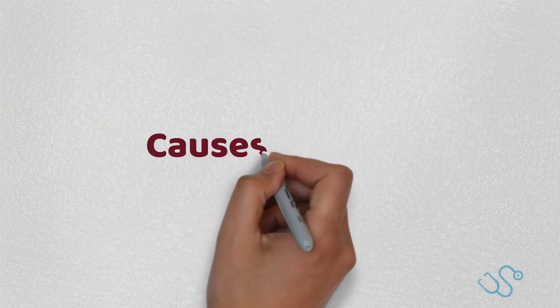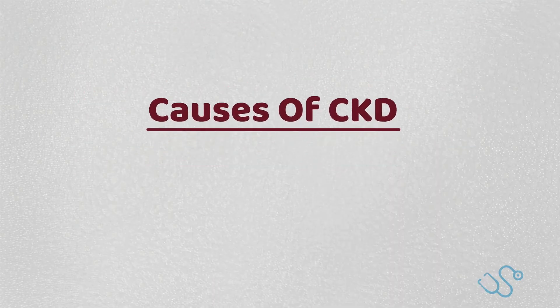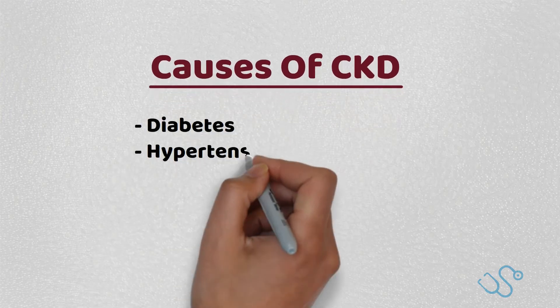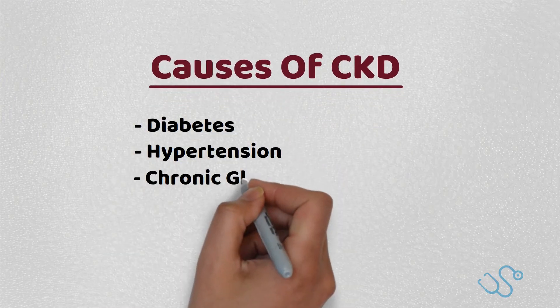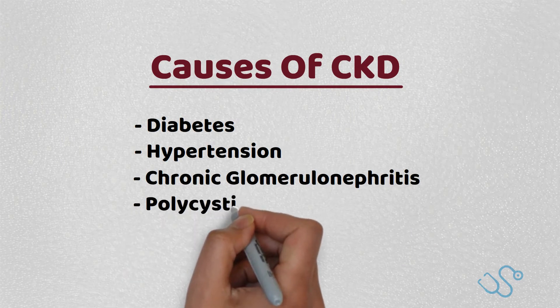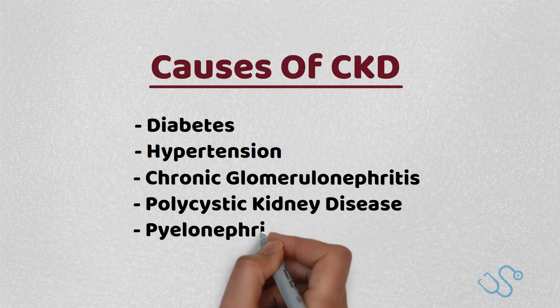Let's start with the most common causes, which by far are diabetes and hypertension. Other common causes include chronic glomerulonephritis, polycystic kidney disease, and pyelonephritis.